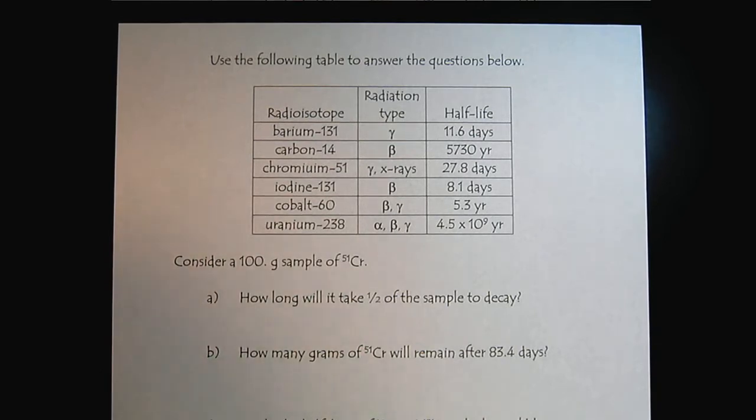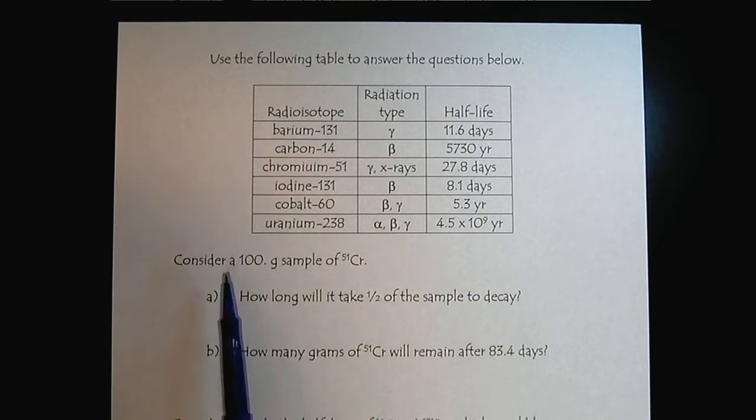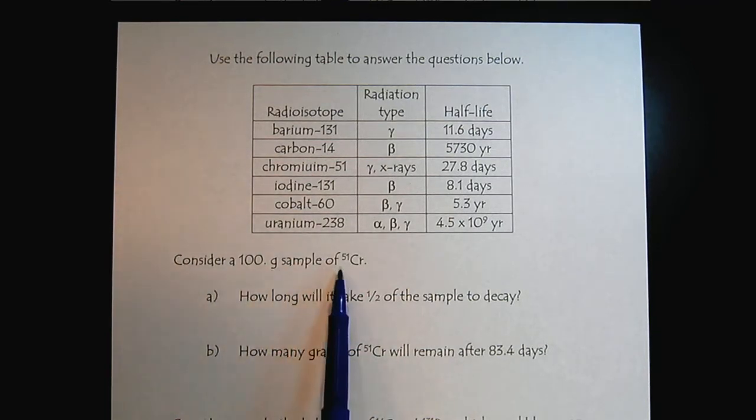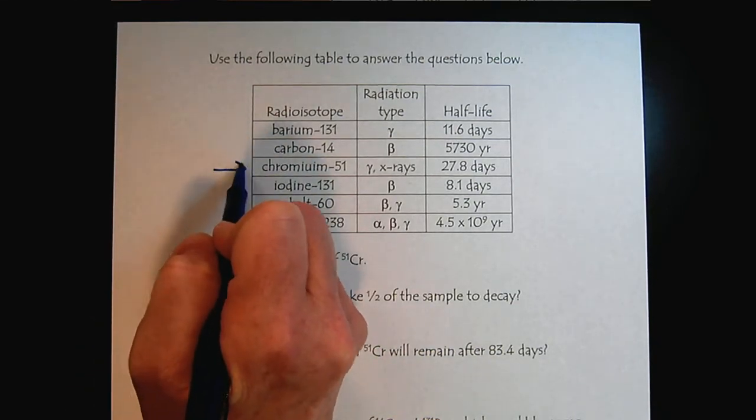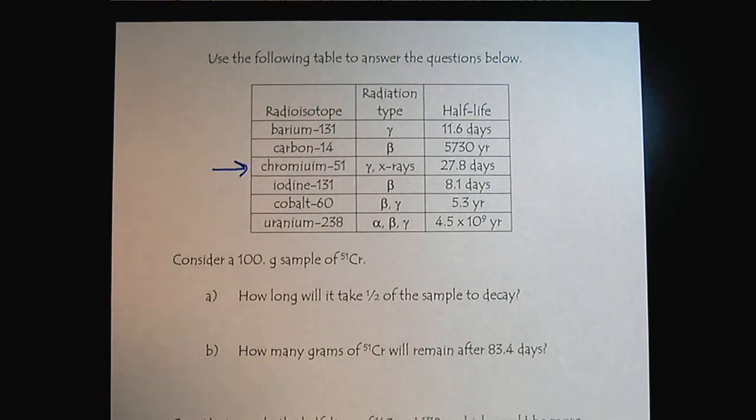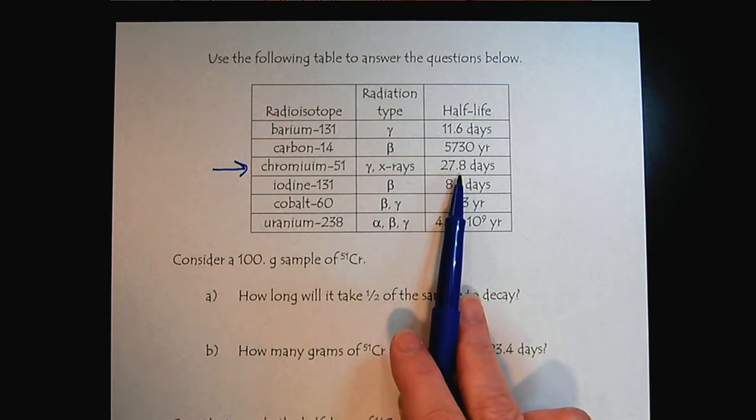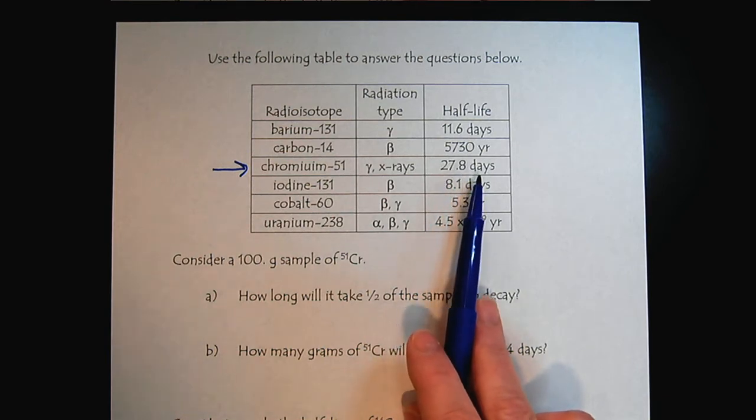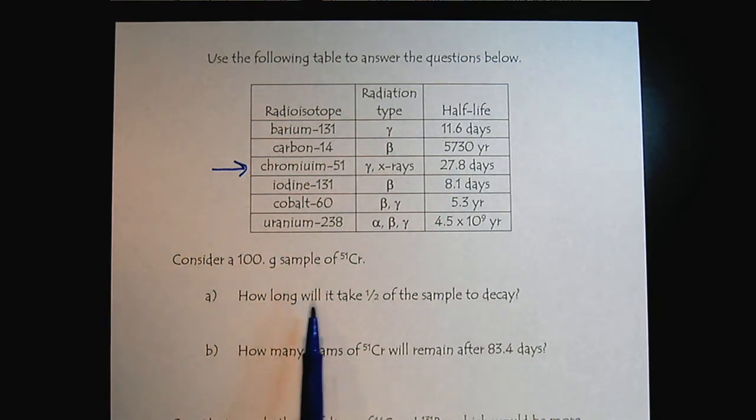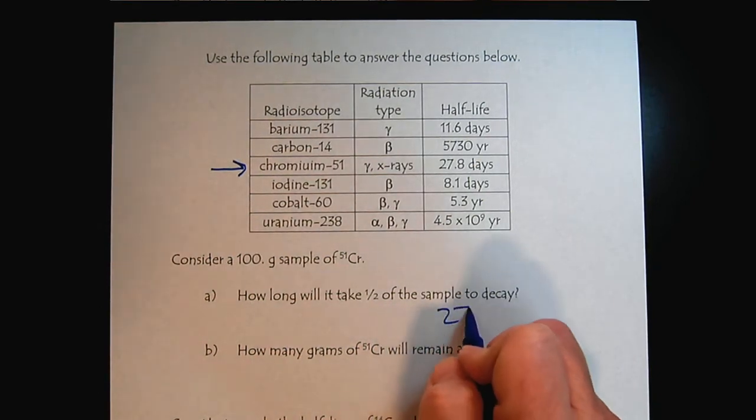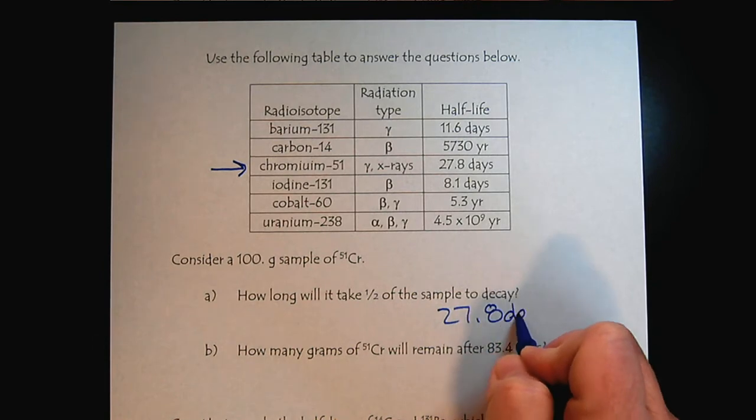So let's practice. So let's consider that we have a hundred gram sample of chromium 151. We see that it has a half-life of 27.8 days. So how long would it take half of the sample to decay? Very simple. 27.8 days.